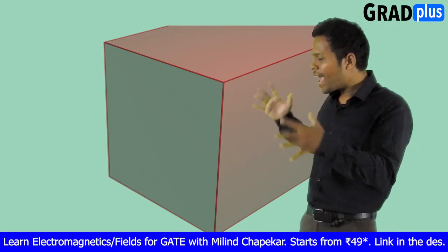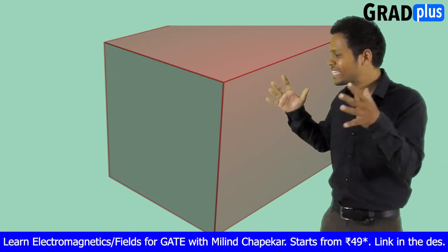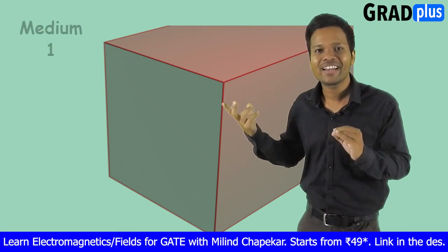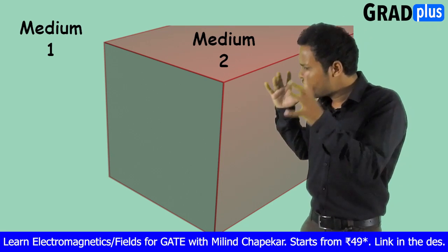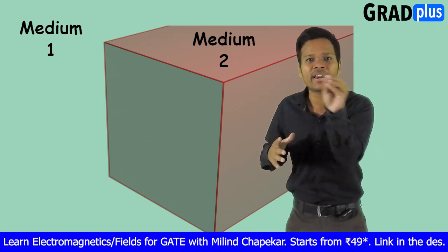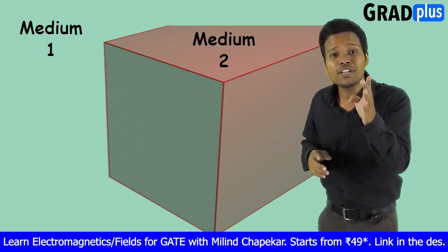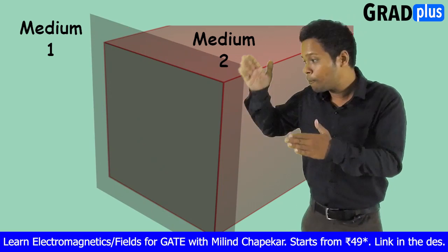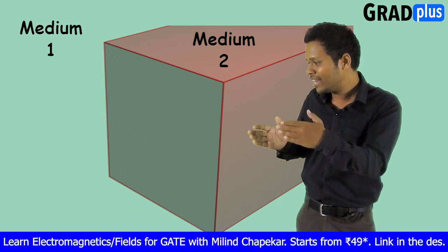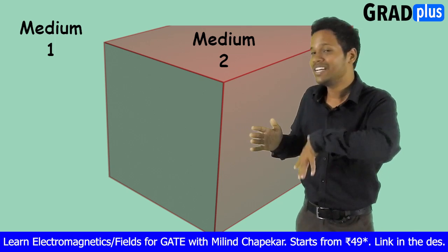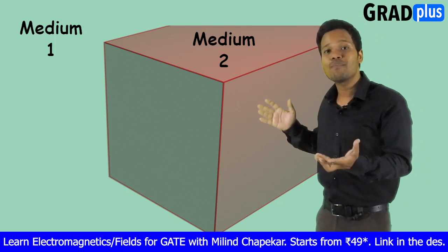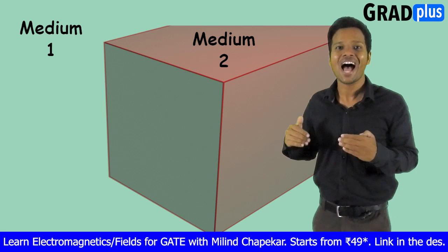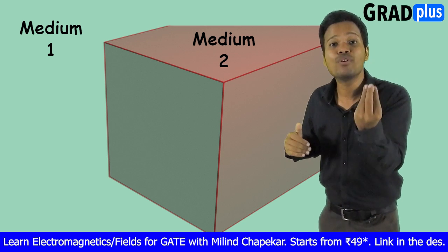Let's consider that we have two media present side by side, as you can see from the screen — medium 1 and medium 2. You can clearly observe the separation between these two media. The separation between them, the plane which is dividing this space into two media with medium 1 on one side and medium 2 on the other, is known as the boundary surface.